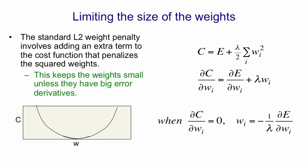That derivative will be zero when the magnitude of the weight is one over lambda times the magnitude of the derivative. So the only way you can have big weights when you're at a minimum of the cost function is if they also have big error derivatives. And this makes the weights much easier to interpret. You don't have a whole lot of weights that are large but aren't doing anything.